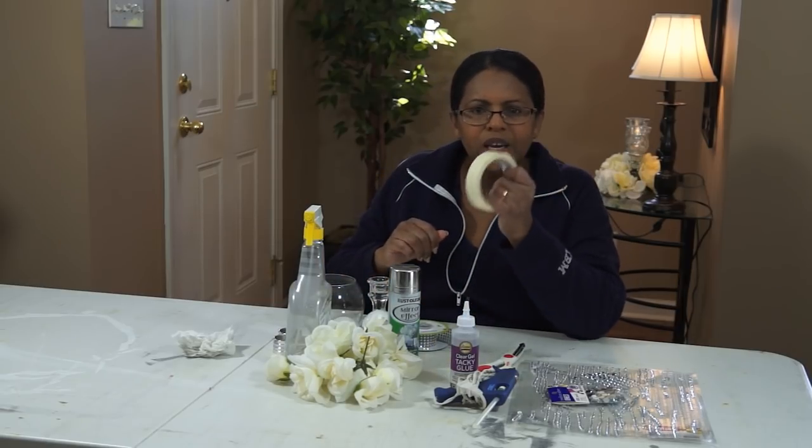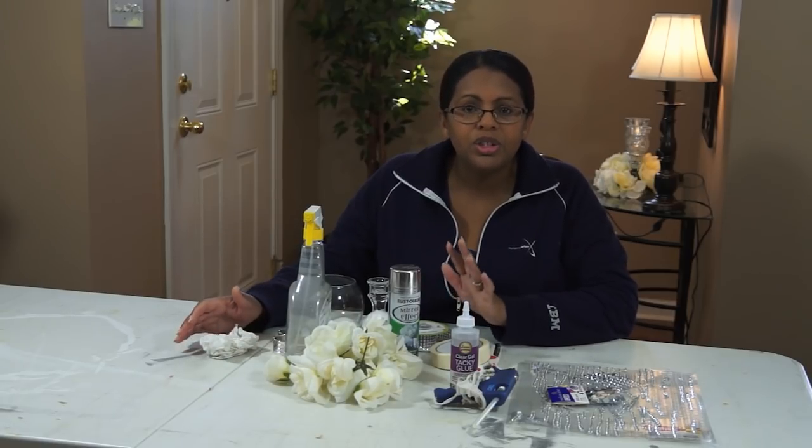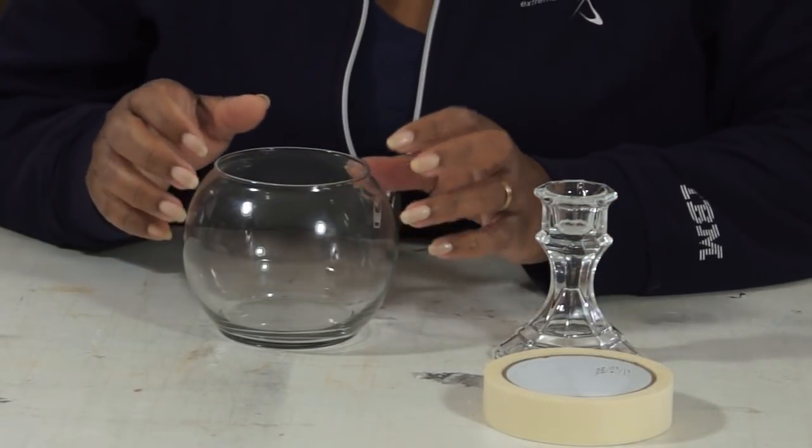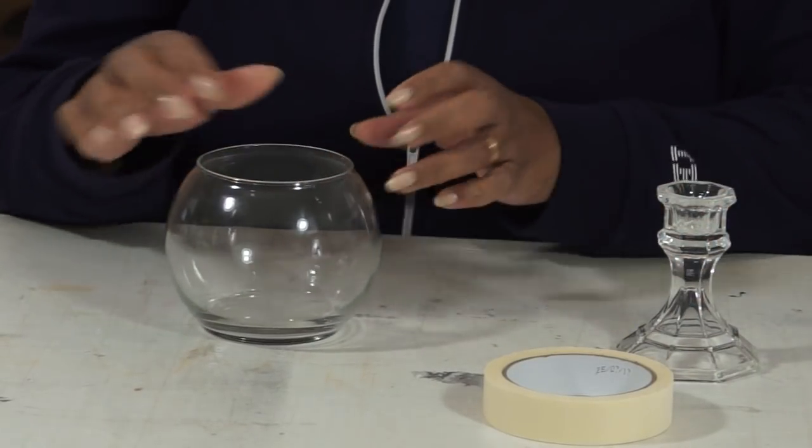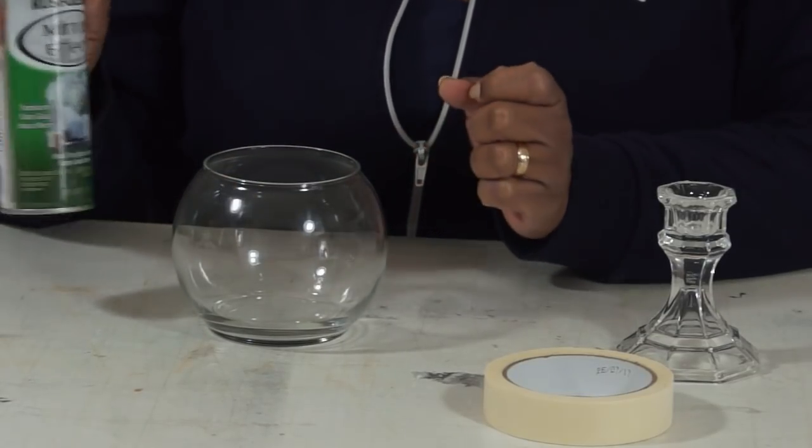So these are the items that you're going to need in order to create this centerpiece. Let's get started. What I'm going to do here is I'm going to go ahead and tape off where I don't want this mirror effect spray paint to touch.